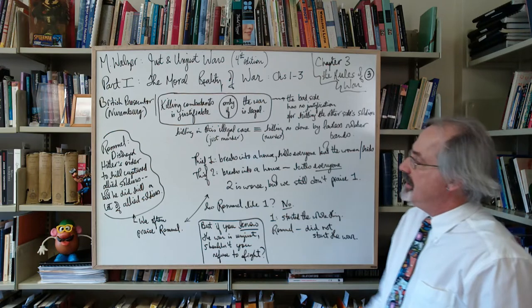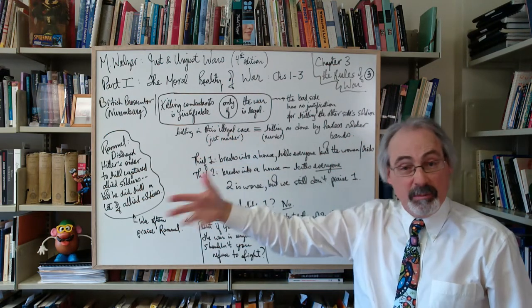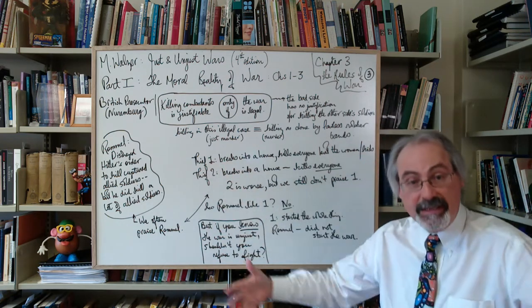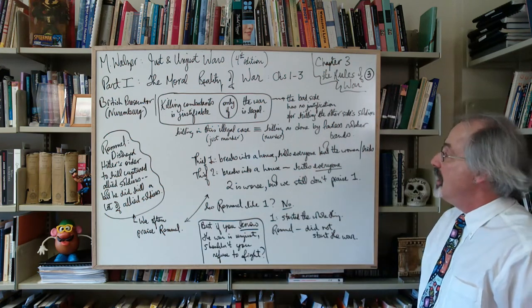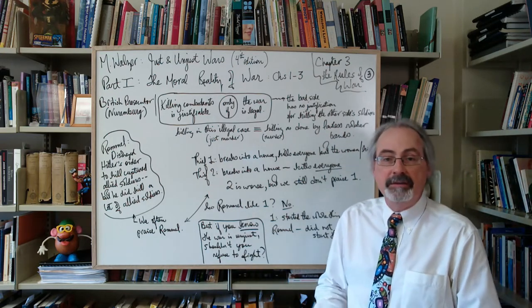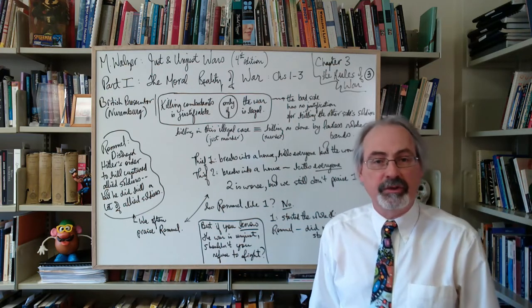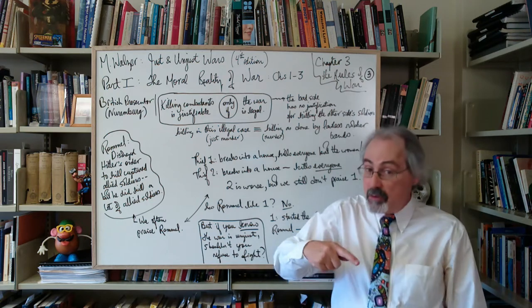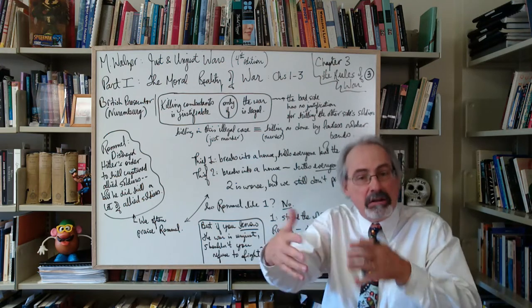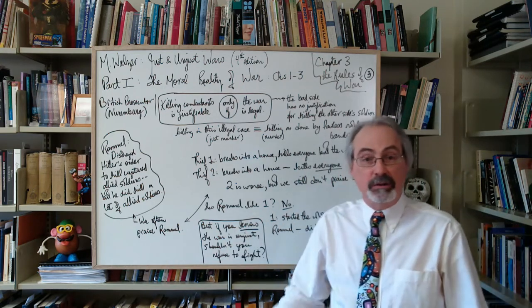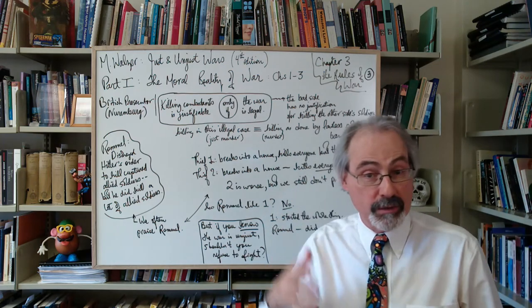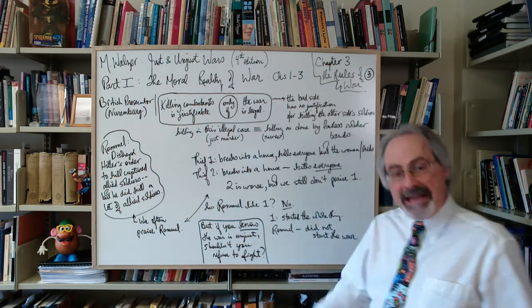So he says that killing in this illegal case is murdering, really the same as murdering done by lawless robber bands. The Nazi regime in its killing of Allied soldiers was just murdering them, but not the other way around. The Allied soldiers fighting back is not murder. A rough analogy: if you're attacked by a killer who murders you, but if you were to kill them in self-defense, we might not call that murder. That's the idea.